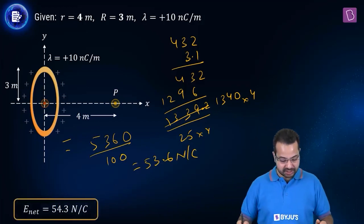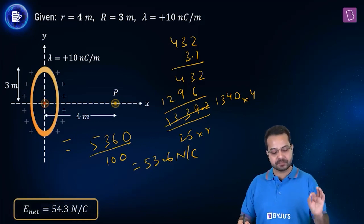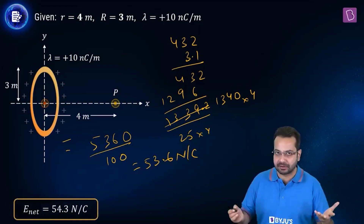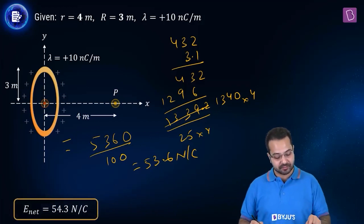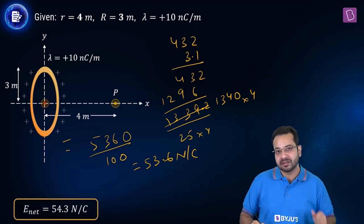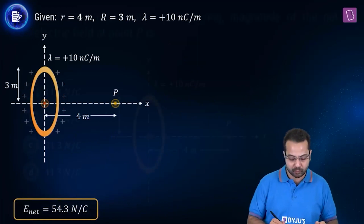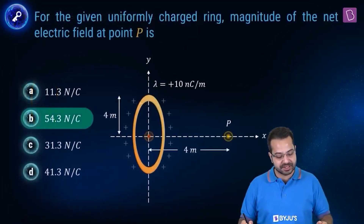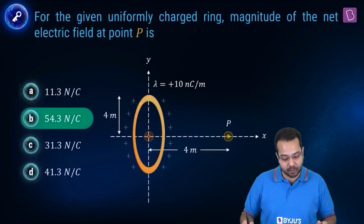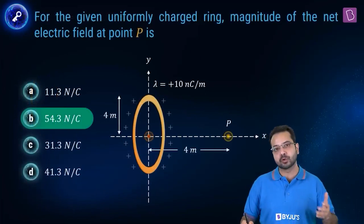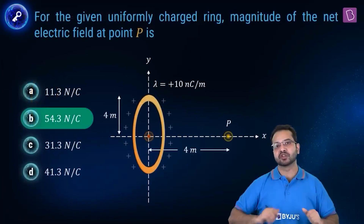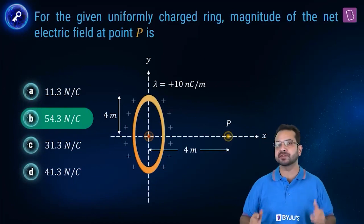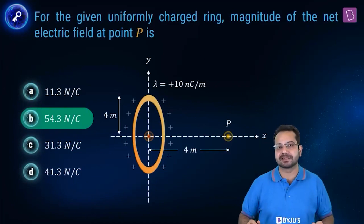We calculated an approximate answer, so there will be some difference. The closest option is option B, 54.3 Newton per Coulomb, and that is my answer. Option B is the correct option.